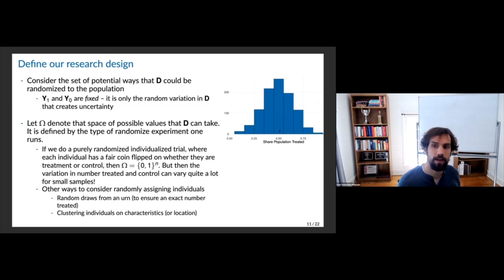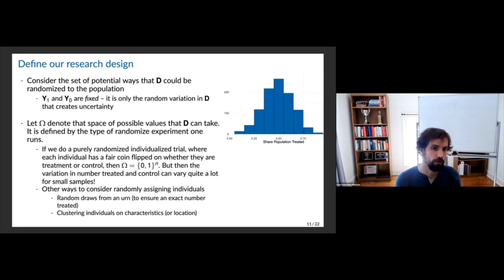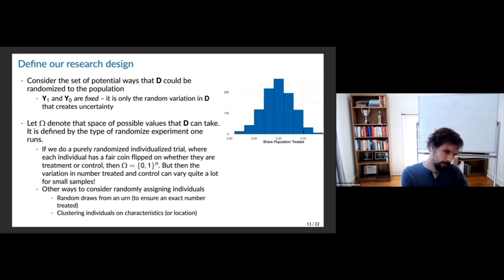This graph shows: if you run a simulation doing coin flips for everybody, on a given draw you might not have many people treated, or too many — it's 50-50 but with only 10 people, some draws give you only one or two treated. So sometimes people do random assignments differently. You can think of random draws from an urn, which ensures a particular share treated. Instead of flipping a coin, you want exactly 50% treated.